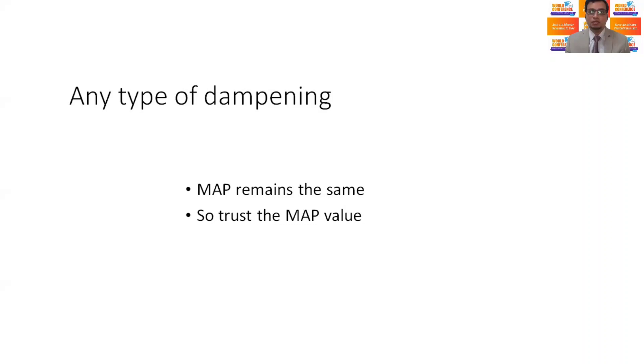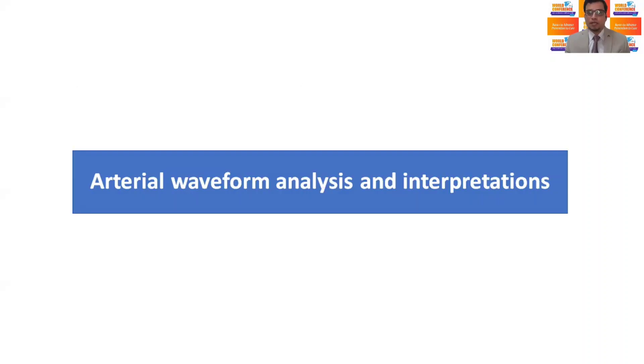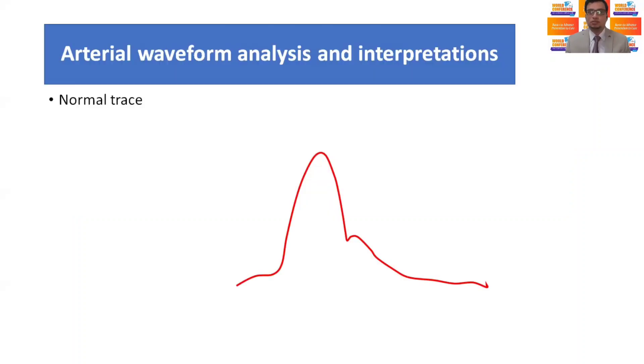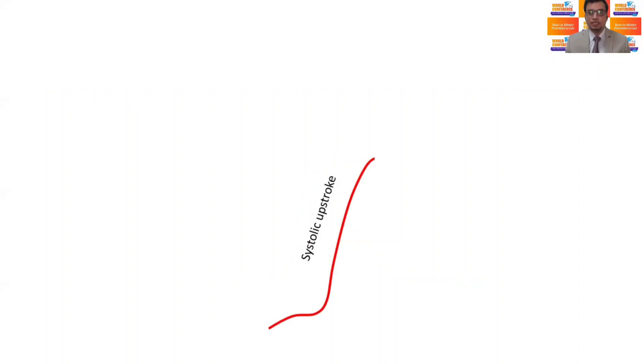Now let's examine the normal arterial waveform first, and then we will talk about the abnormal waveforms. So the normal arterial trace has a systolic upstroke, which is formed by the forceful contraction of left ventricle, which ends at the highest pressure, that is peak pressure, which corresponds to the systolic blood pressure.